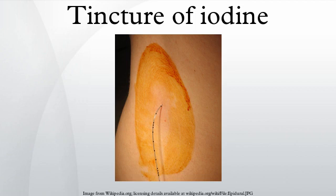Tincture of iodine, or iodine tincture, is an antiseptic, also called weak iodine solution. It is usually 2 to 7% elemental iodine, along with potassium iodide or sodium iodide, dissolved in a mixture of ethanol and water. It was used from 1908 in preoperative skin preparation by surgeon Antonio Grosic.